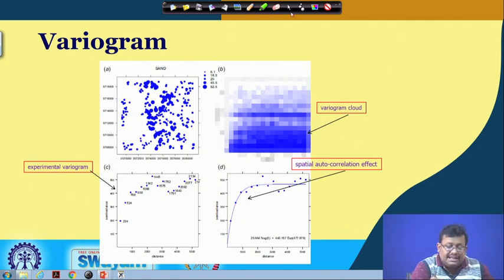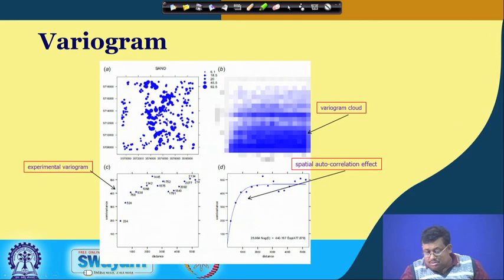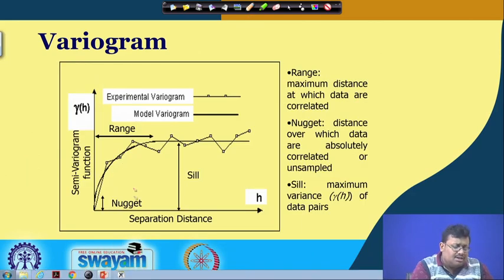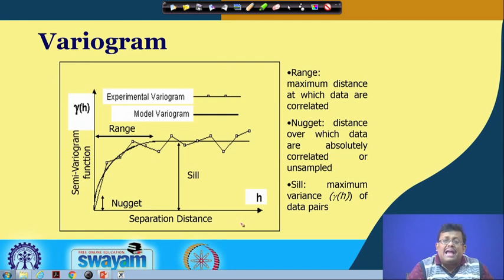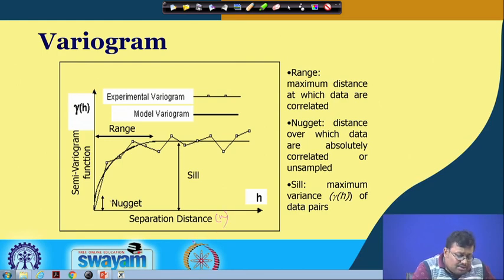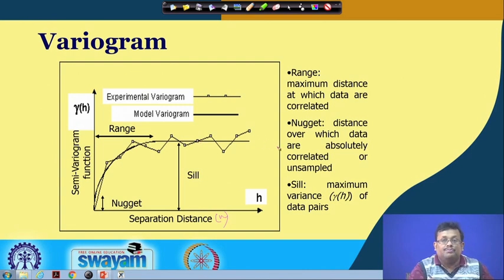This spatial autocorrelation structure can be captured using a variogram. In the semi-variogram function, the x-axis is called lag or separation distance, expressed as h. As the separation distance of point pairs increases, the semi-variance increases up to a certain point and then reaches a plateau. The curve does not start from the origin but from a certain point — this distance is called the nugget, which denotes pure noise or measurement error.